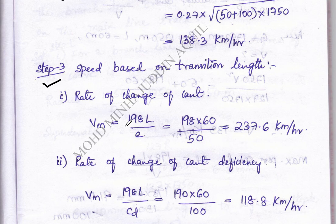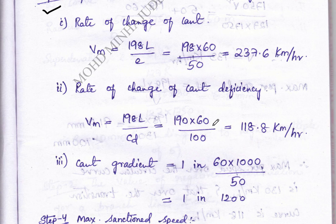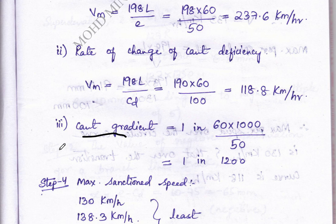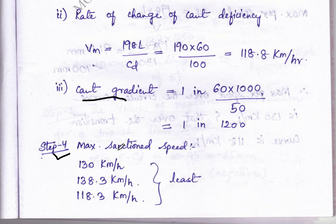The third step is speed based on transition length, as we have done in earlier problems, using two conditions: Vm = 198E/1 and Vm = 198/CD. Whichever value is less, we take that into consideration. Along with that, we also calculate the cant gradient.